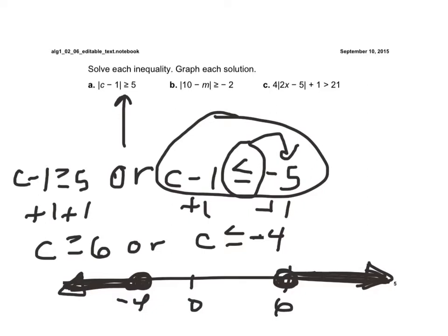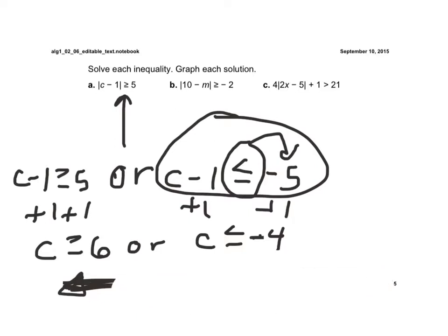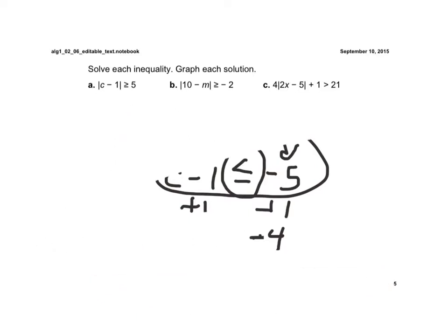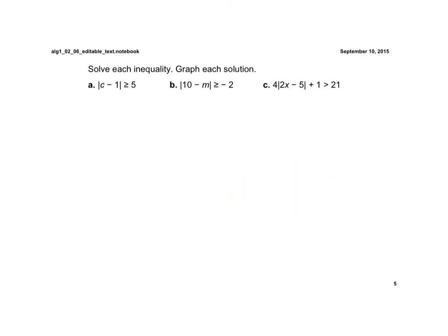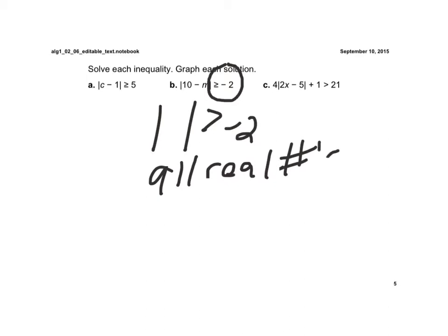Now I'm going to erase this one and do letter b. Letter b is another special case. In this case it's greater than or equal to a negative number. What we have to remember is that an absolute value is always greater than a negative number, so in this case we'd have all real numbers. It saves you a lot of work if you can recognize that right away.